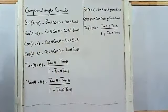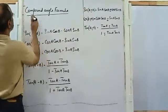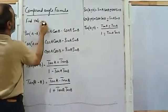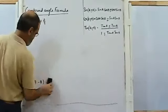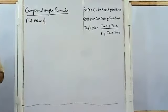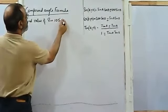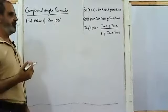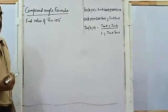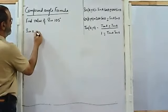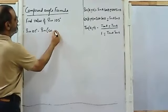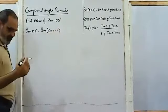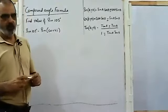The first question we are going to solve by applying this formula is: find the value of sine 105. To find the value of sine 105 using the compound angle formula, I have split 105 into two angles whose values are known to me.